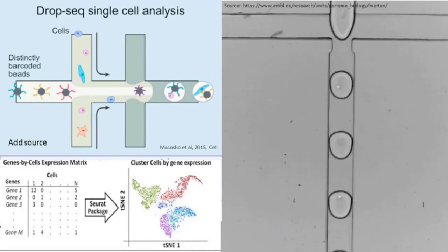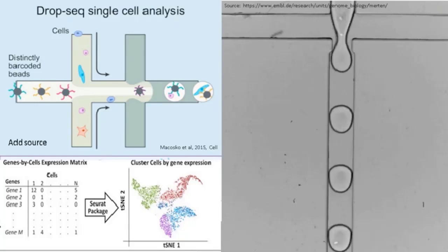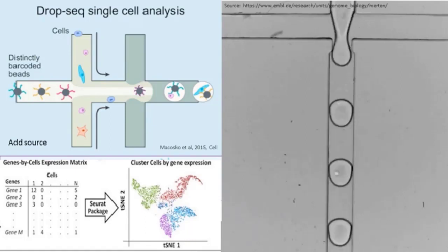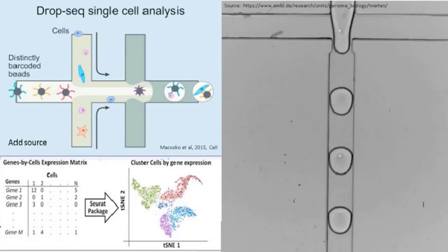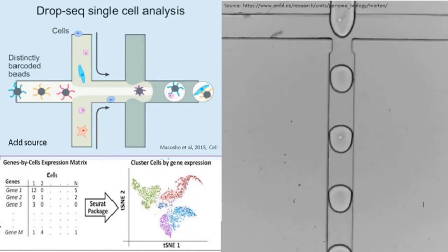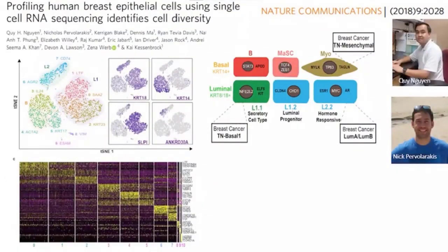Every mRNA captured is assigned a cell-specific barcode, so we can perform library construction and sequence everything together. We can then deconvolute which read comes from which cell and generate gene-by-cell matrices. These are obviously very complex, so we need computational tools to make sense of them. Many people use the Seurat package to project individual cells into a two-dimensional representation where each dot represents a cell, and the closer each cell is to another, the more similar they are in expression space.